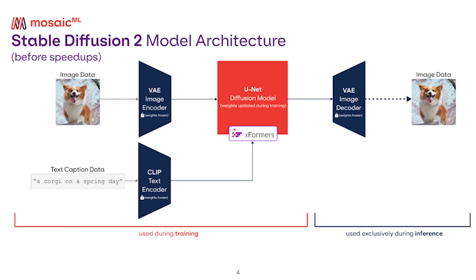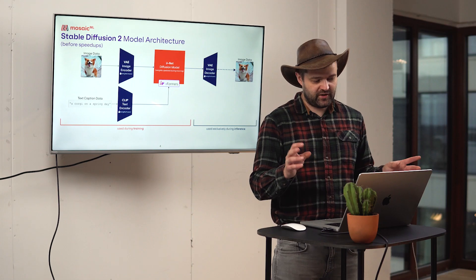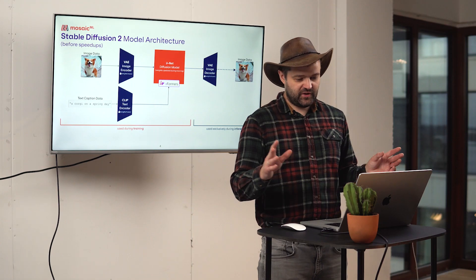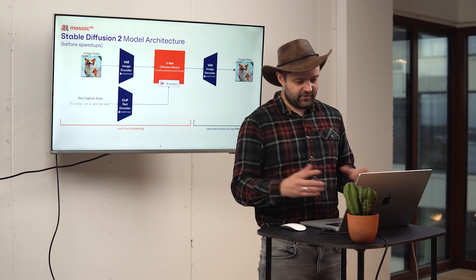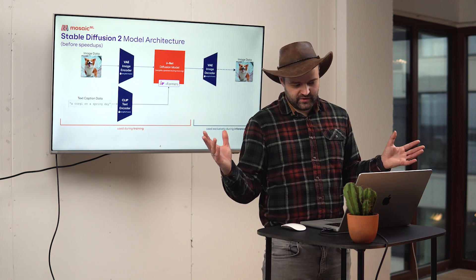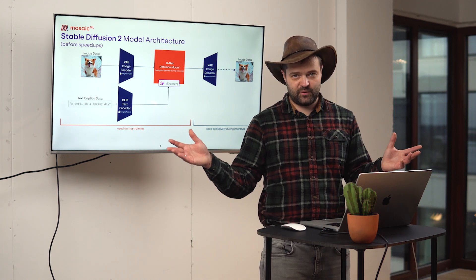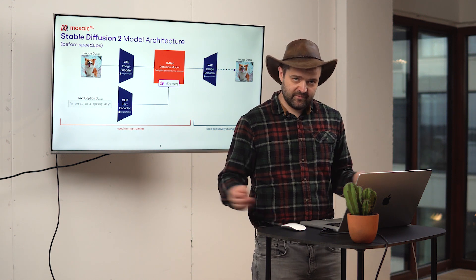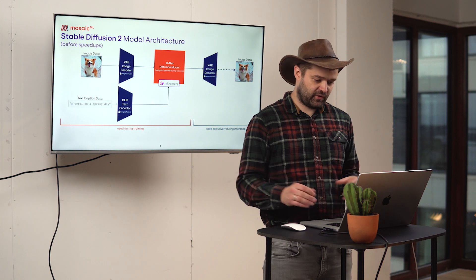Theoretically you could also feed an image into these models. Some models support feeding images like DALL-E 2 and some other tools, but the latest ones — DALL-E 3 and MidJourney — don't support this yet, even though it should not be too difficult to add. There is probably some reason why it doesn't work as well.